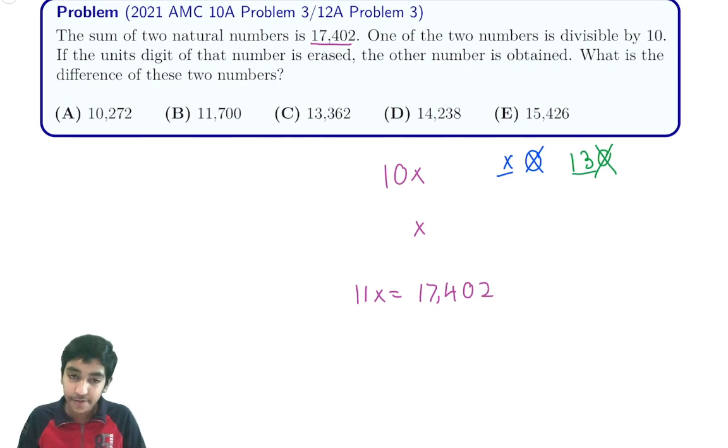But we want to find the difference of the two numbers, so instead we want to find 10x minus x equals 9x. So what is 9x? Well if 11x is this quantity, then 9x is just going to be 9 over 11 times 17,402.